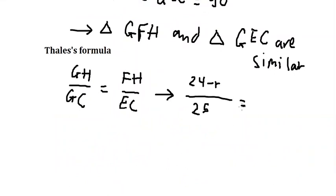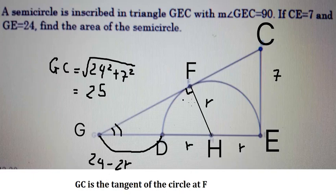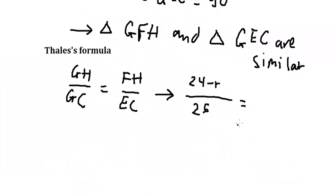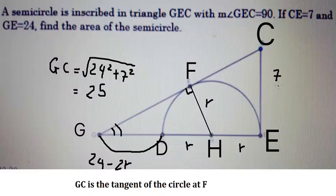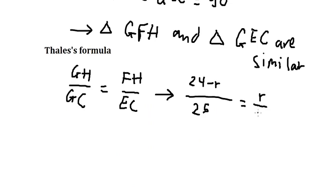FH is r and EC is 7. Now we can find the value of r. We put 7 on the left and 25 on the right.